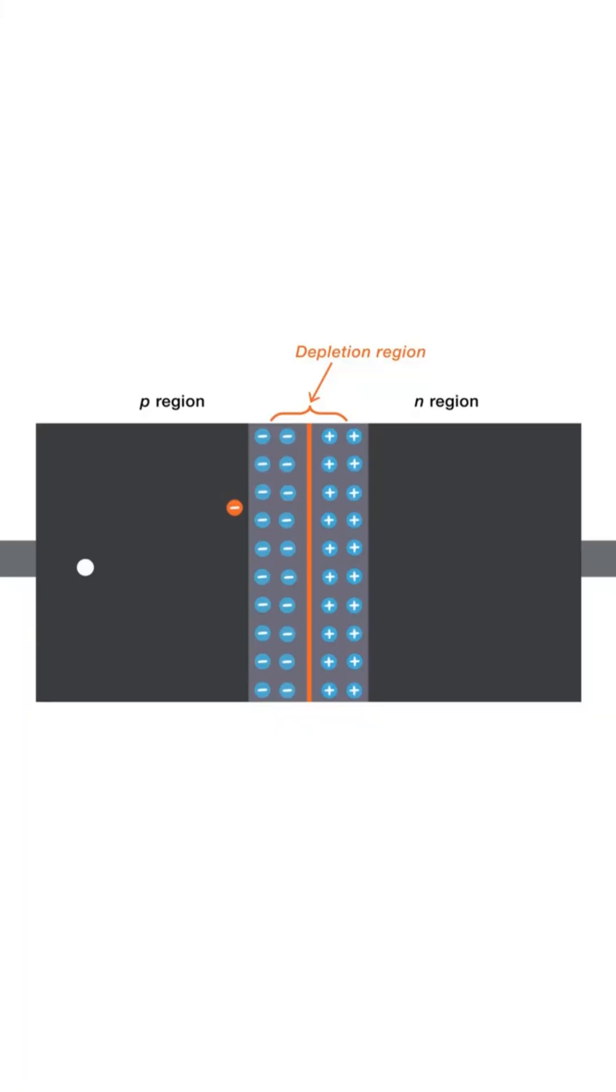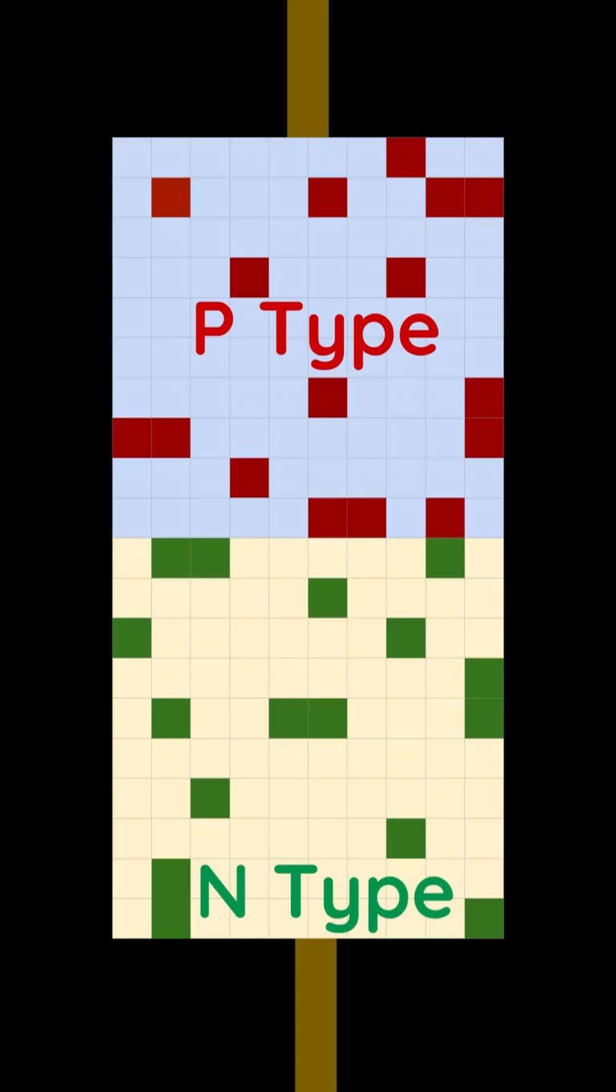Semiconductors use a band gap, which is a barrier to control the flow of current. This barrier is in a junction created by a p-type and an n-type semiconductor.